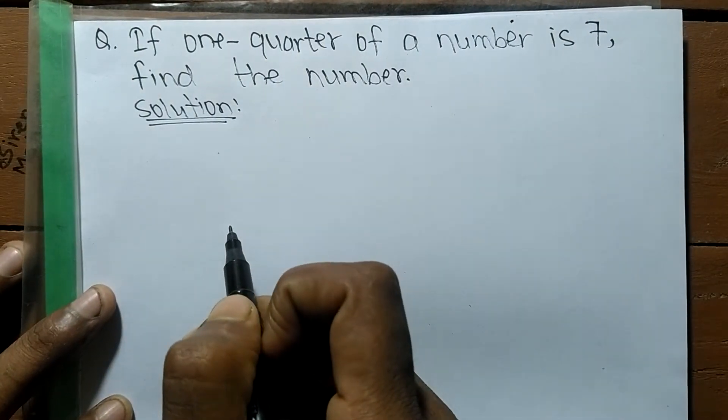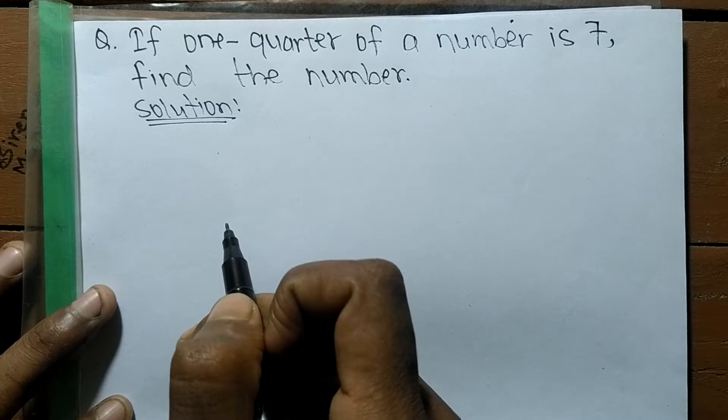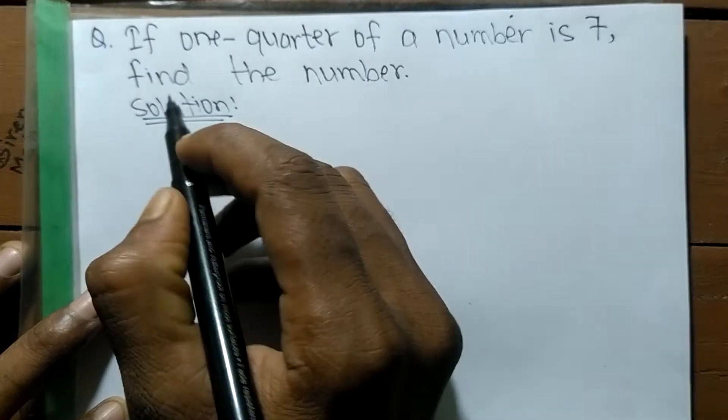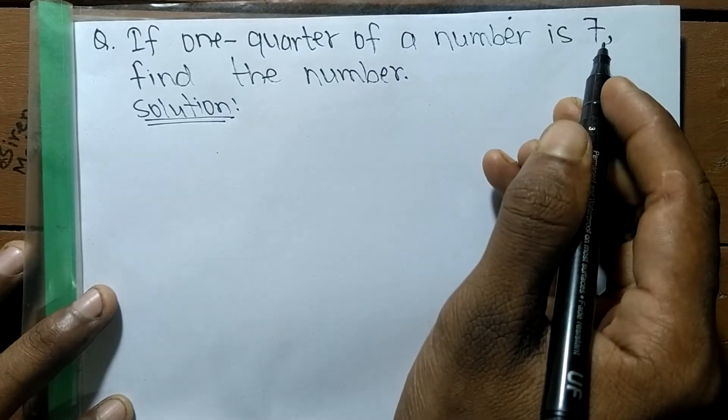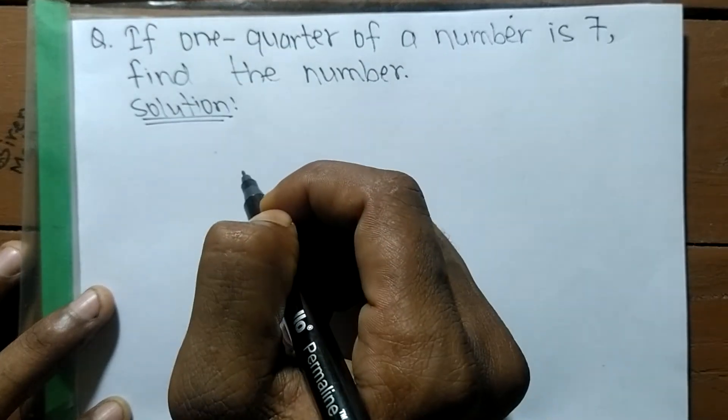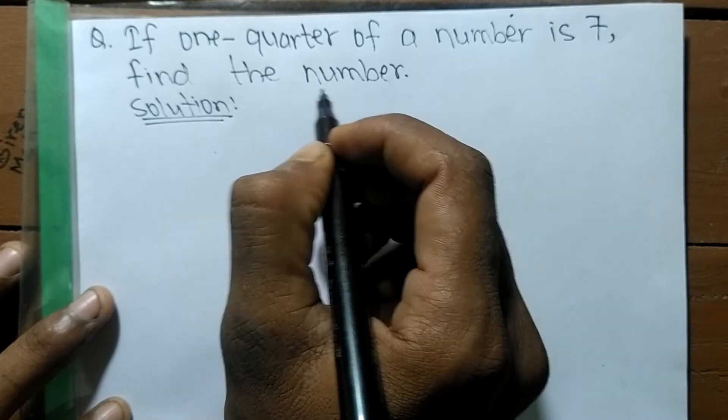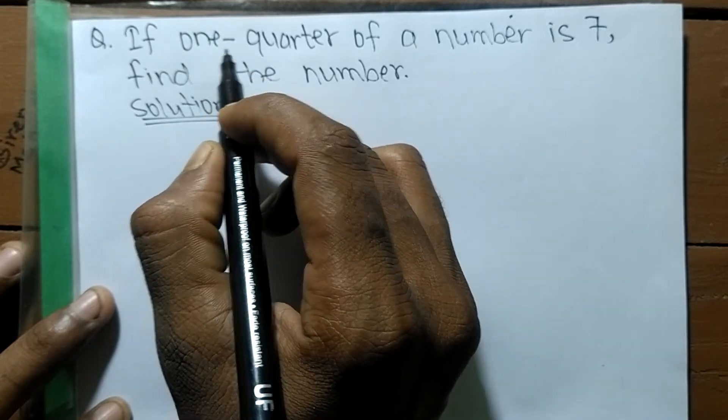So today in this video we are going to solve a word problem. The question is: if one quarter of a number is seven, find the number. Here we have to find out the number which one quarter is seven.